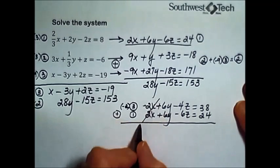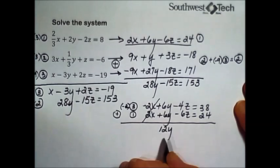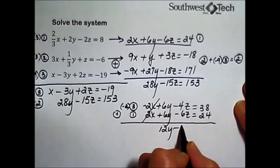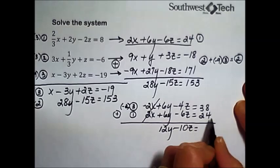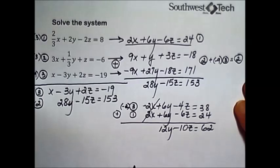When we add, the x's are gone, that was the goal. 6 and 6 make 12y; minus 4 plus minus 6 is minus 10z. And when we add, we end up with 62.